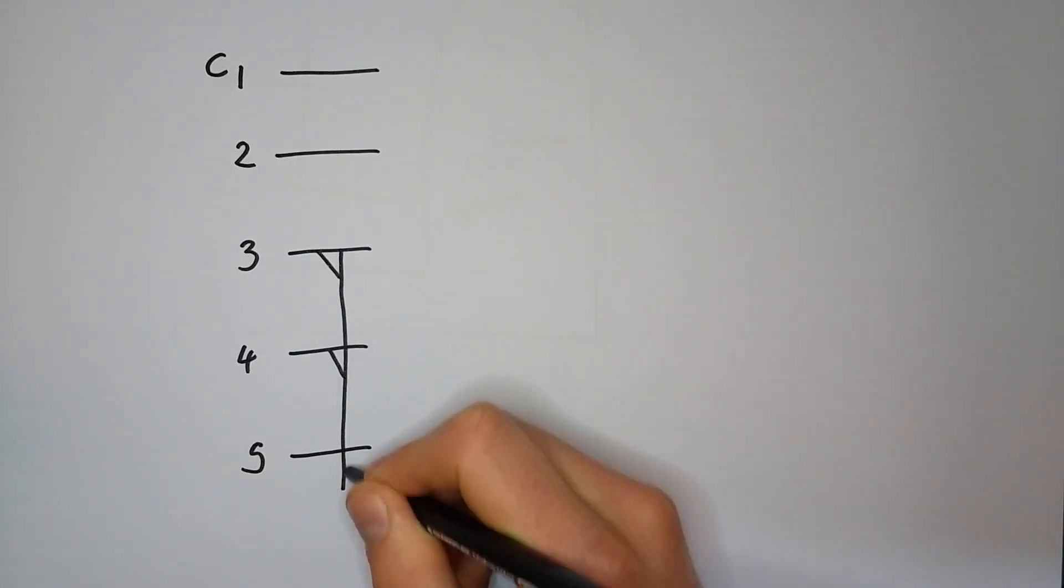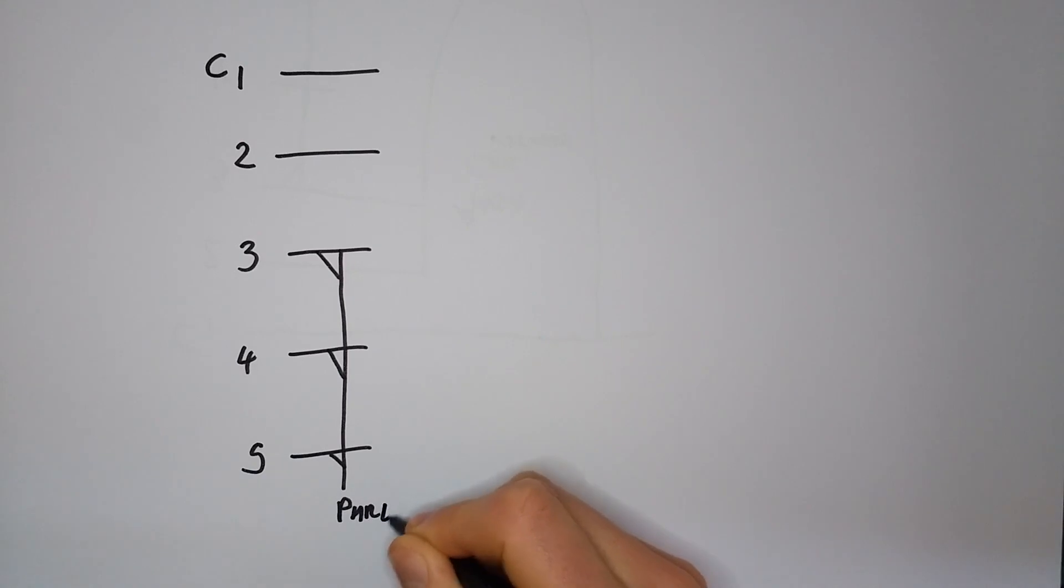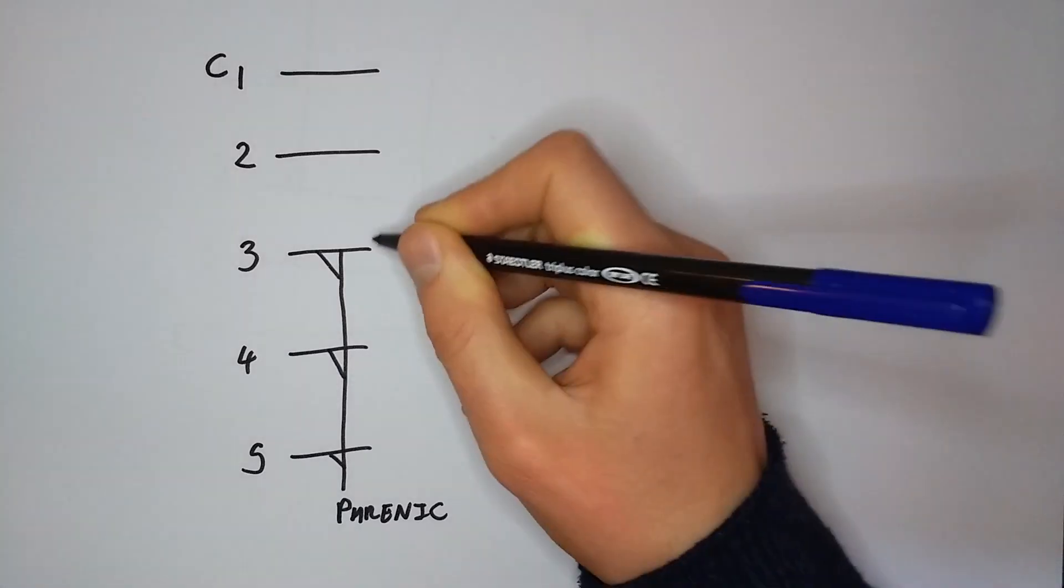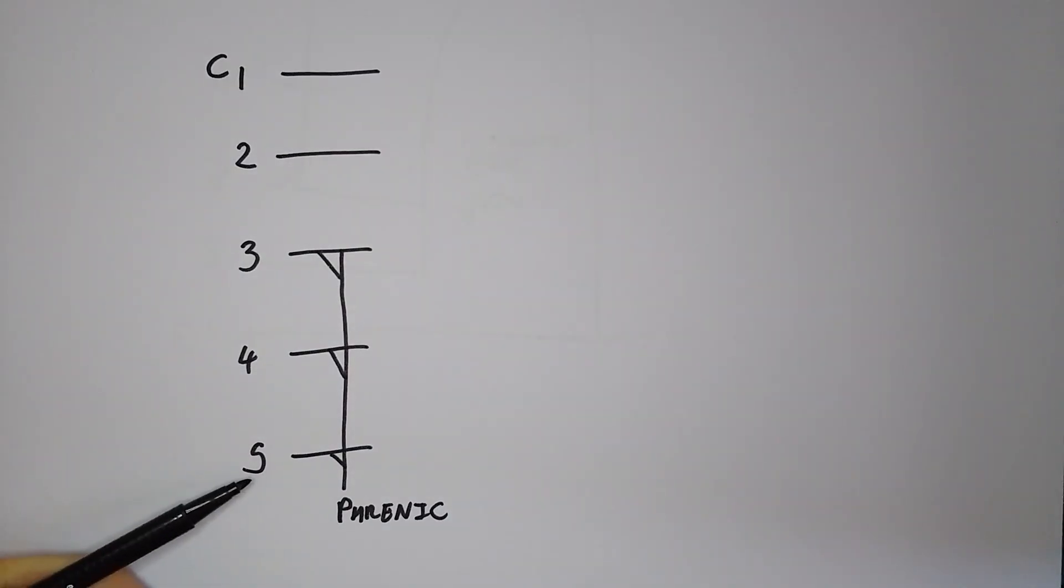From C3, 4 and 5 we'll draw the phrenic nerve, passing inferiorly. This goes to the diaphragm, so remember this by the rhyme: 3, 4 and 5 keeps the diaphragm alive.